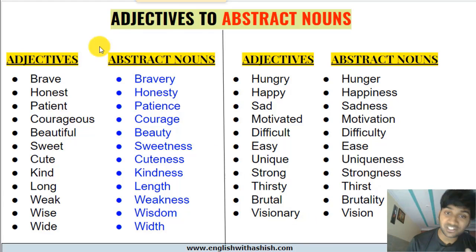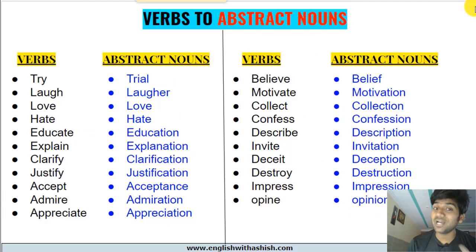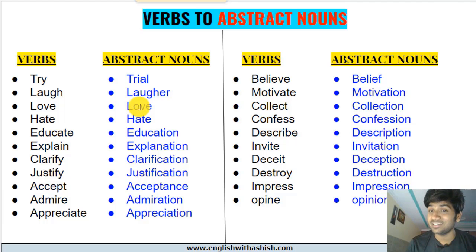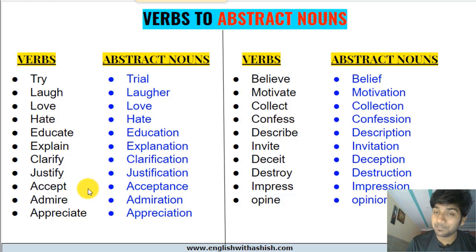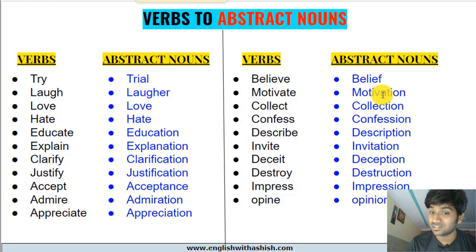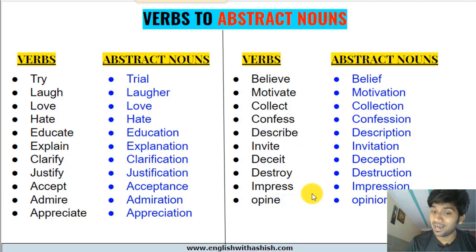Verbs to abstract nouns — try → trial, laugh → laughter, love → love (love can be both a verb and an abstract noun), hate → hate, educate → education, explain → explanation, clarify → clarification, justify → justification, accept → acceptance, admire → admiration, believe → belief, motivate → motivation, collect → collection, confess → confession, describe → description, invite → invitation, deceit → deception, destroy → destruction, impress → impression, opine → opinion.